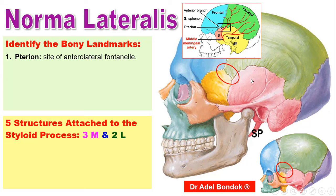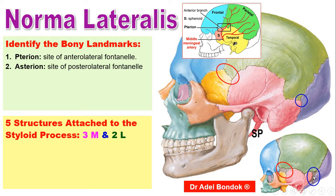The second landmark is the asterion — the meeting of three bones: parietal, occipital, and mastoid process. In the newborn skull it is represented by the posterolateral fontanelle, which ossifies at the age of three months. The asterion lies opposite the sigmoid sinus.